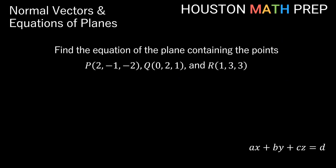Let's look at one more example: find the equation of the plane containing points P = (2, -1, -2), Q = (0, 2, 1), and R = (1, 3, 3). We have plenty of points but no vectors and no normal vector. With three points we can find two vectors in the plane, then take their cross product. Let's find vector PQ and vector PR. Vector PQ = Q - P = (-2, 3, 3). Vector PR = R - P = (-1, 4, 5). Now we have two vectors in the plane and can find the normal vector.